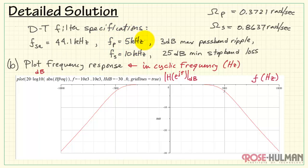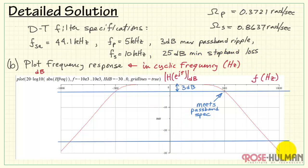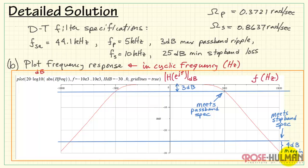Let's check the specs. At 5 kHz, the response must be no more than 3 dB away from 0 dB — the 3 dB max passband ripple. The plot shows the filter meets the passband spec. At 10 kHz, we need at least 25 dB of attenuation. Drawing in the line at 25 dB and checking at 10 kHz shows a margin of about 4 dB. The filter meets the stopband specification as well. This is the result for Part B.